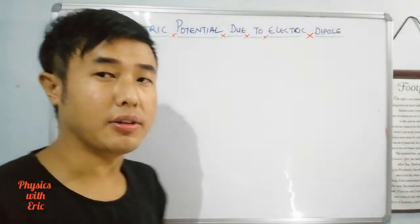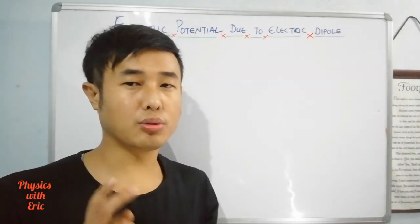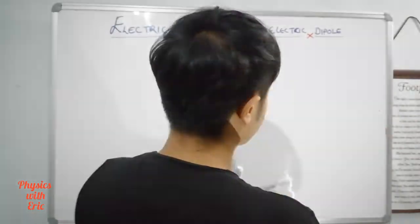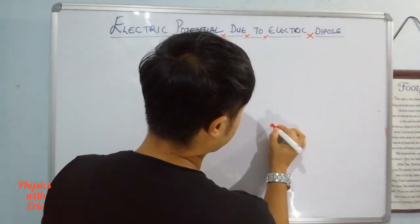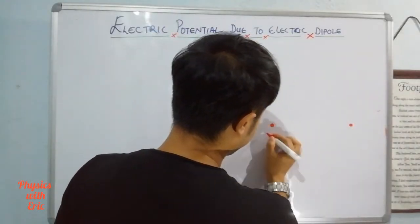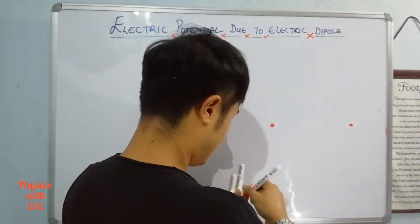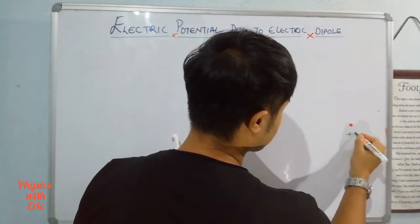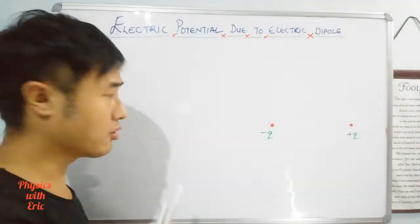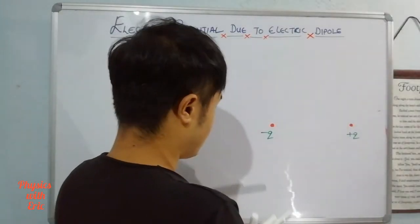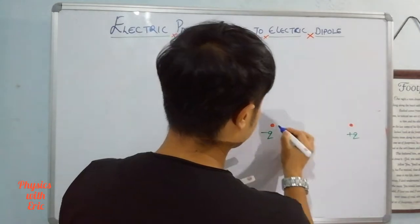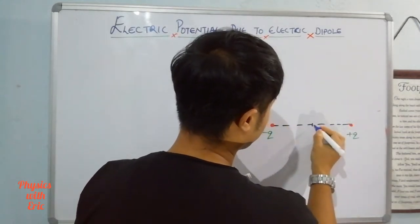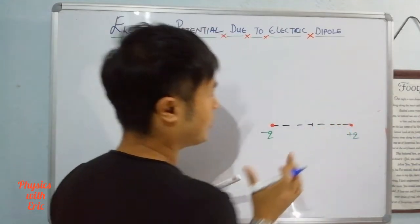An electric dipole consists of two charges that are equal in magnitude but opposite in sign. This charge is minus q and plus q, and the distance of the dipole is 2a, where a is considered half the separation.